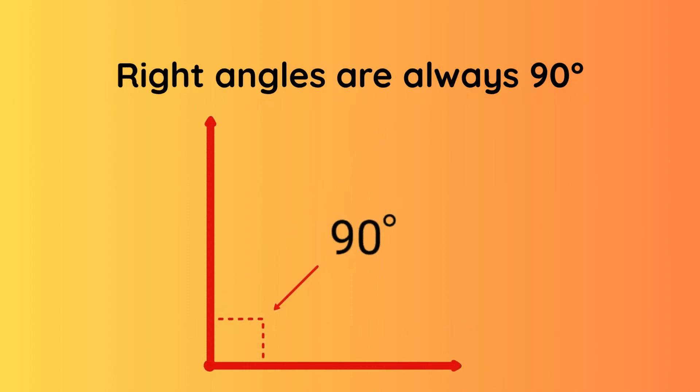Right angles are always 90 degrees, and this is the type of angle you will find on shapes such as squares and rectangles.